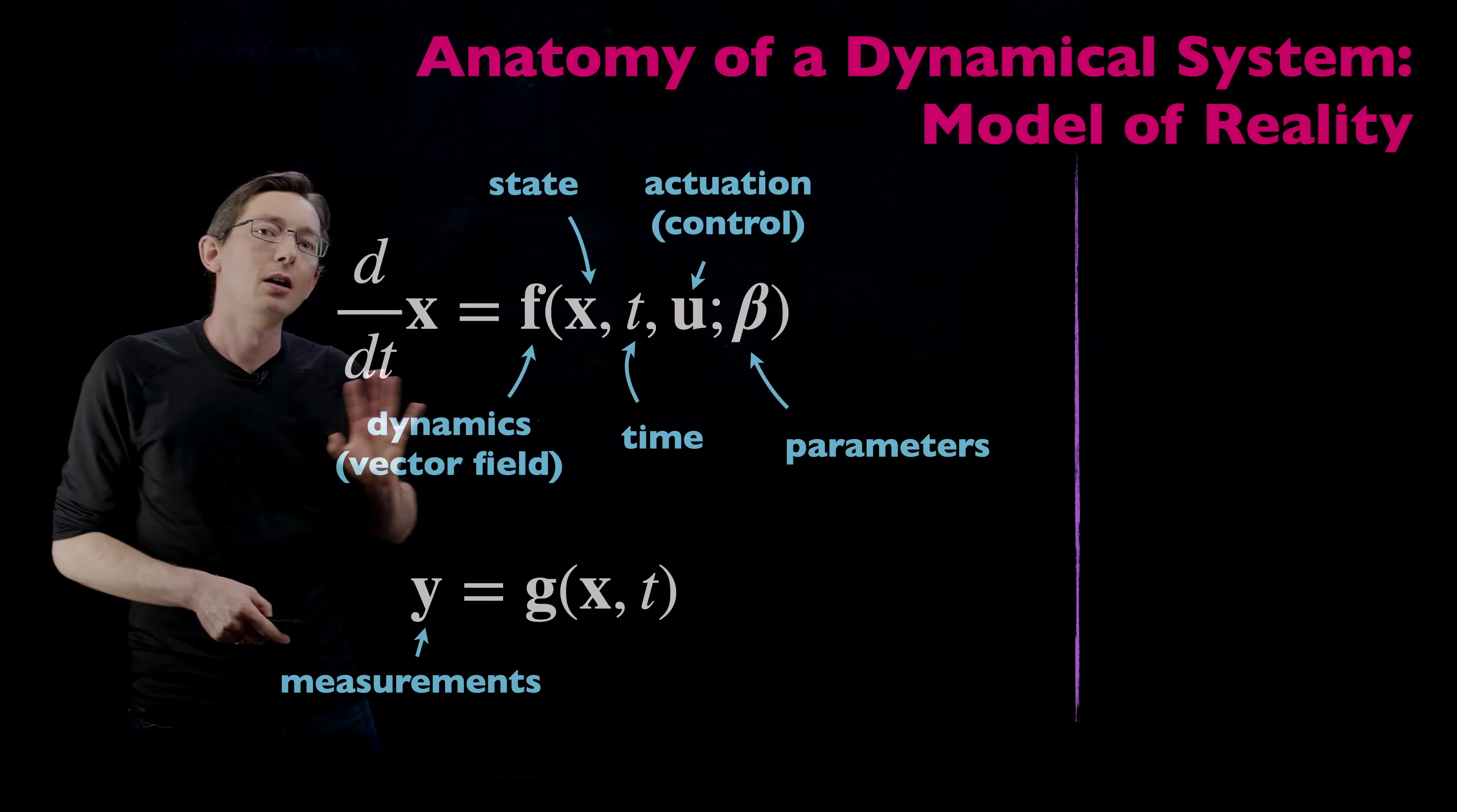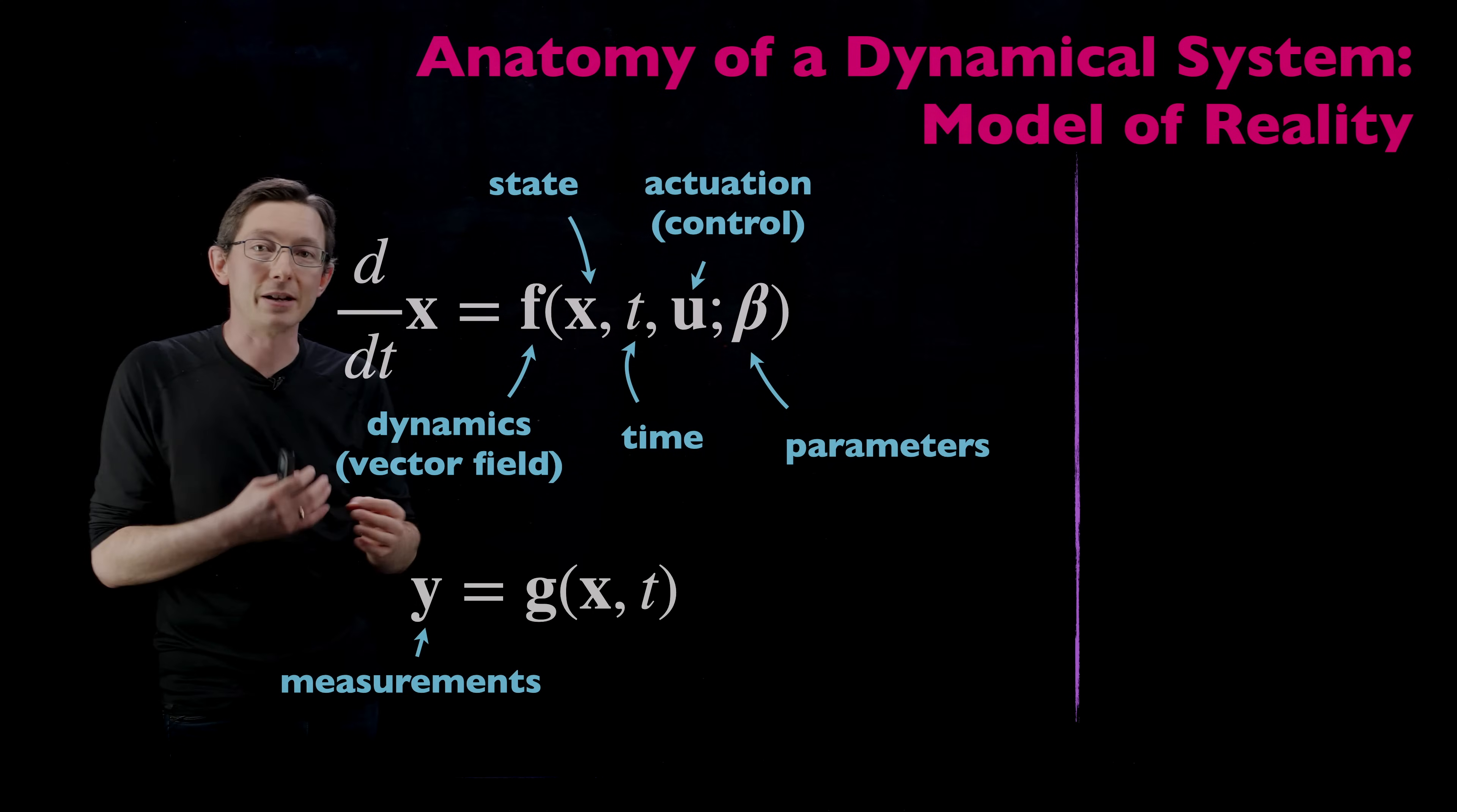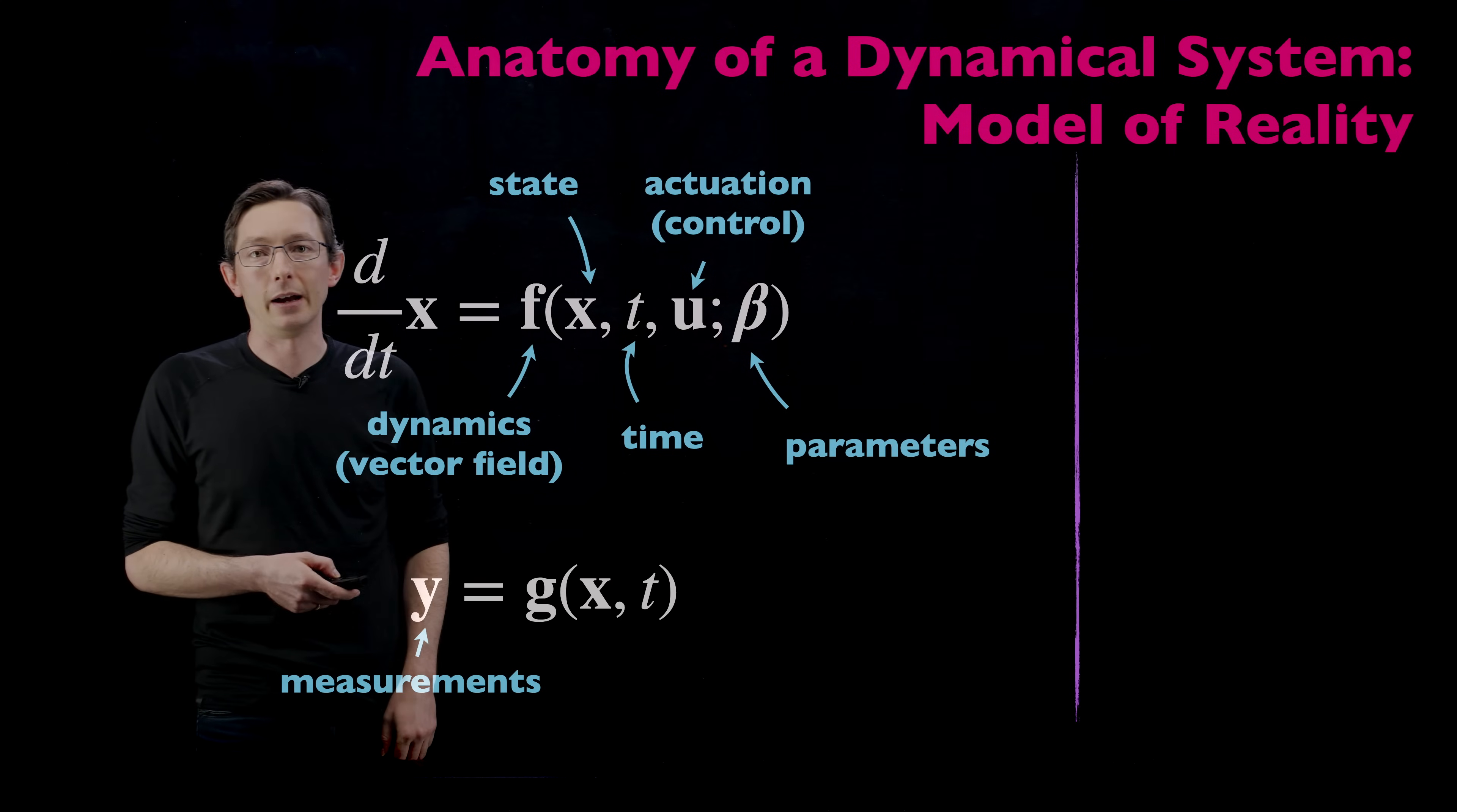In addition, we also have measurements of our system. We don't always have access to this full state X because maybe my system is exceedingly large. You can't measure all of the brain, all of the neurons in your brain. That would be completely impractical. So maybe you can measure a really small subset or even some crude measurement, some proxy measurement like EKG or EEG or something like that. So you have these measurements in Y.